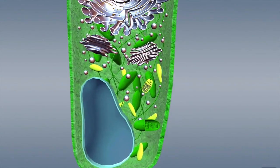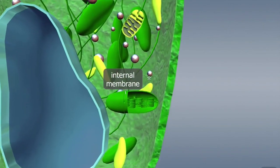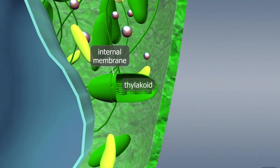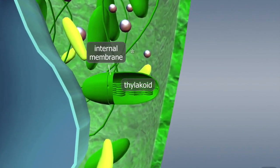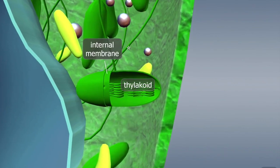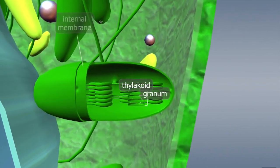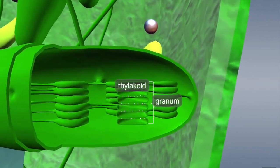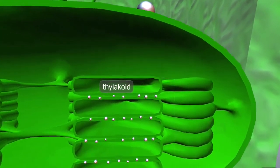Chloroplasts have a double membrane. The internal membrane forms the disc-like thylakoids, which form stacked membranous structures called grana. The thylakoid membrane contains the key enzymes for the light phase of photosynthesis.